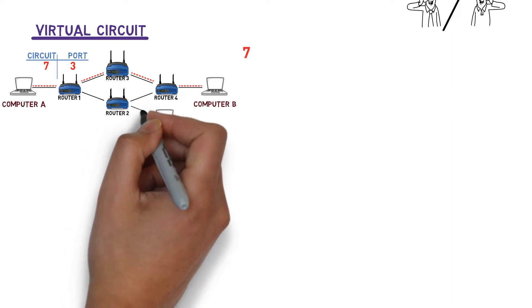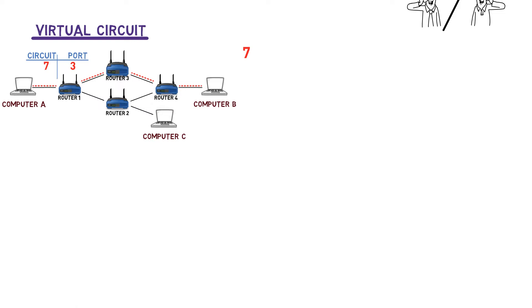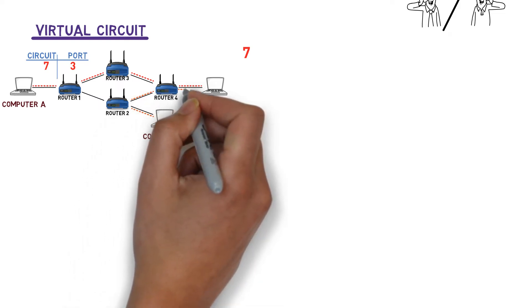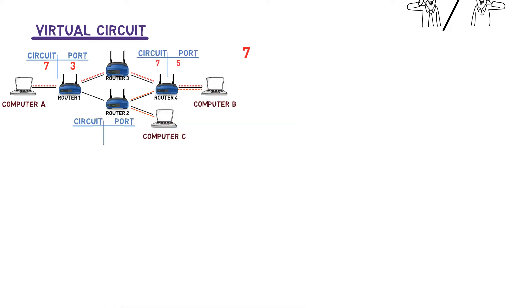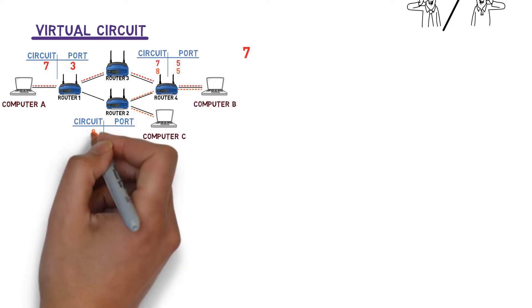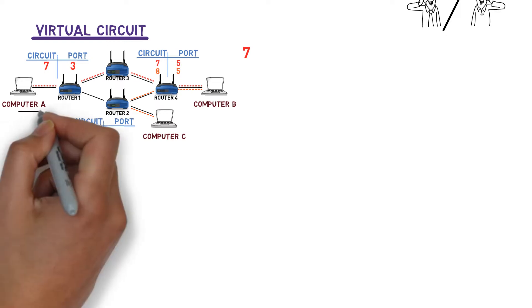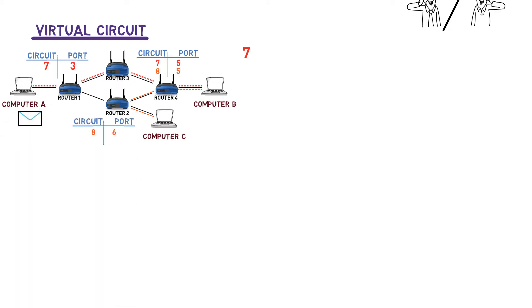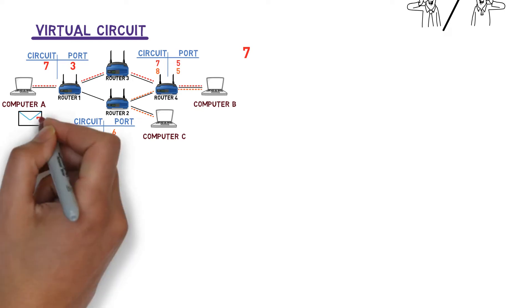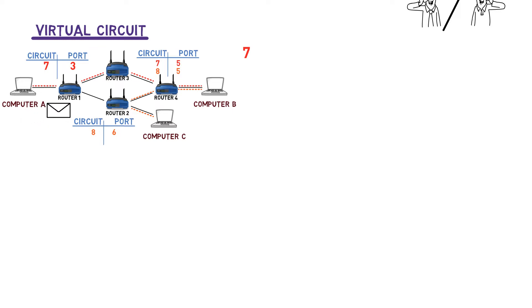Let's say we have computer C which also has a connection with computer B. If this connection goes through routers 2 and 4, then the following entries will be added to their tables. When routers receive a packet, how do they know what circuit it belongs to? Each packet has to carry a short circuit ID. So the packet sent from computer A to router 1 has to state that it belongs to circuit 7. Then the router looks at its table for this circuit ID, finds the relevant entry, and forwards the packet to router 3 accordingly.